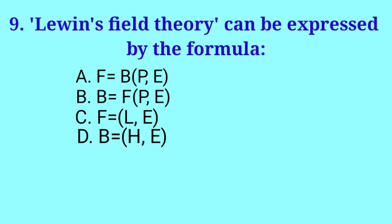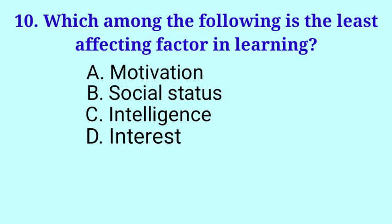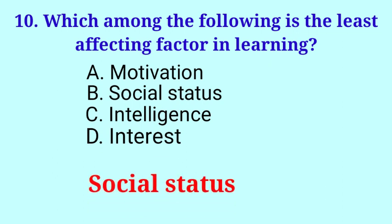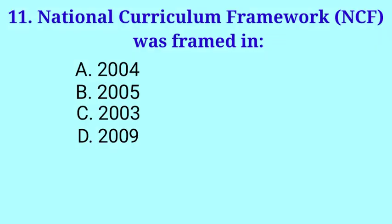Lewin's field theory can be expressed by the formula: B is equal to FPE. Which among the following is the least affecting factor in learning? Answer: Social status. National Curriculum Framework was framed in 2005.